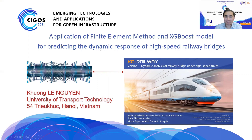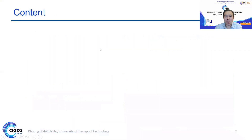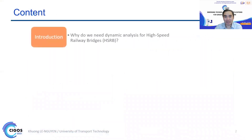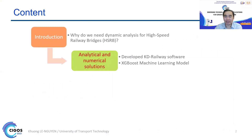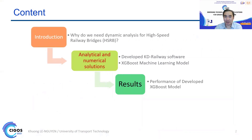For the limited time, I will try to talk about why we need to analyze the dynamic effect for high-speed railway bridges. I focused on my software created from open source code, custom for the finite element method, and applying the XGBoost machine learning model for predicting the dynamic response of high-speed railways. Some more detail on the performance of the developed XGBoost model will be described, and then the conclusion.